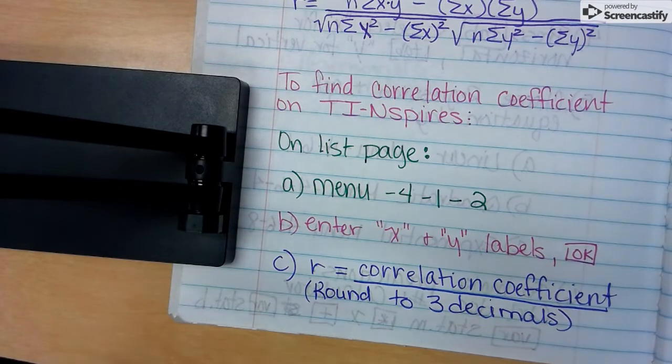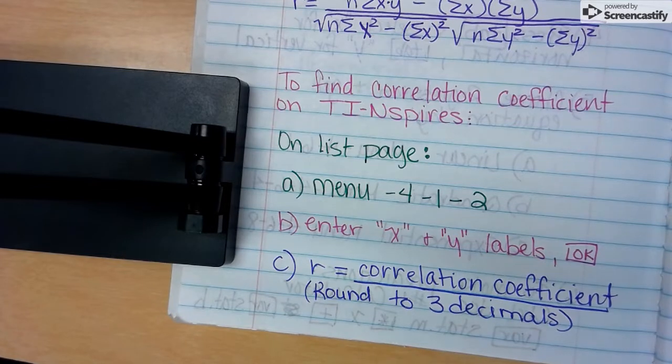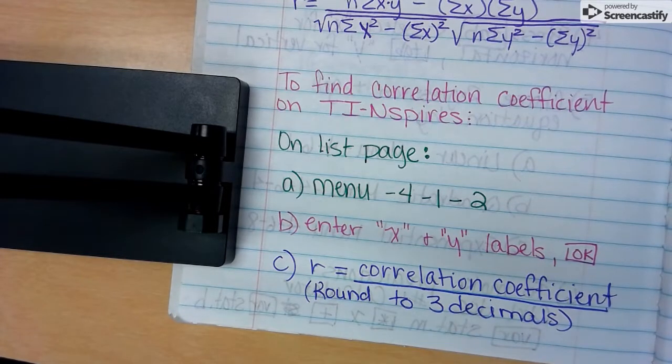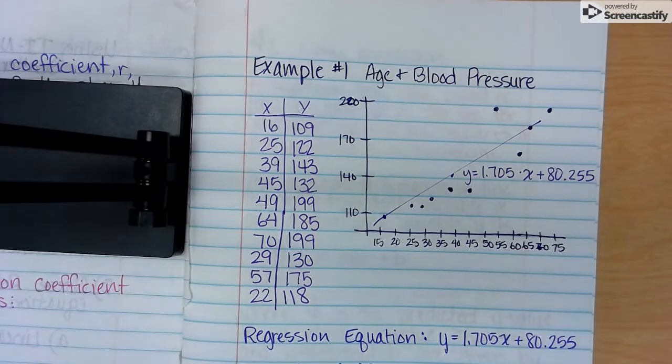With the coefficient, the correlation coefficient tells us the percentage of strength that the two x and y's have in relationship to each other. The higher the number, the higher the strength. The lower the number, closer to zero, the lower the strength. If it's positive, it's a positive correlation. If it's negative, it's a negative correlation.